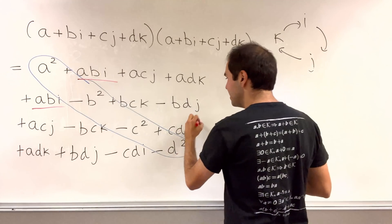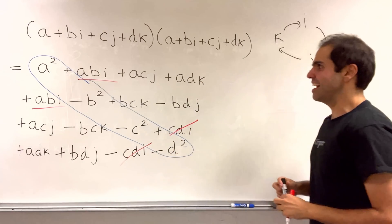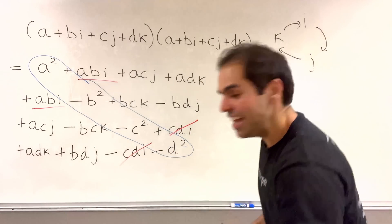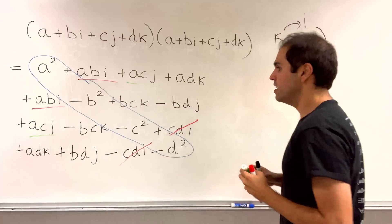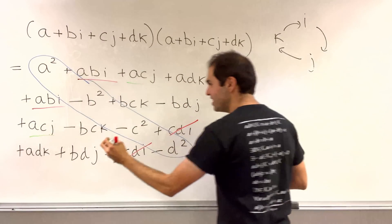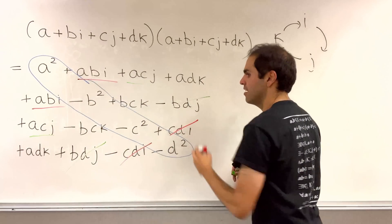And cdi, cdi, that cancels out. For the j terms, there is acj, acj. So two acj, and then the bdj's cancel out.